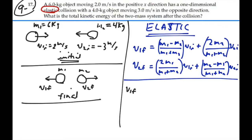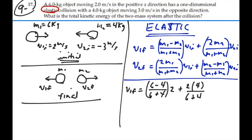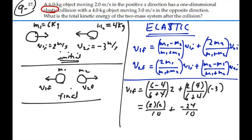For V1 final, I'm going to have mass one, which is 6, minus mass two, which is 4, over mass one plus mass two, times V1 initial, which is 2 meters per second, plus 2 times mass two, which is 4, over mass one plus mass two, 6 plus 4, times V2 initial, which is negative 3. So we have 2 times 2 over 10, plus 8 times negative 3, which is negative 24 over 10. That's 4 plus negative 24, which is negative 20 over 10, or negative 2 meters per second. So the final velocity of mass one is negative 2 meters per second.